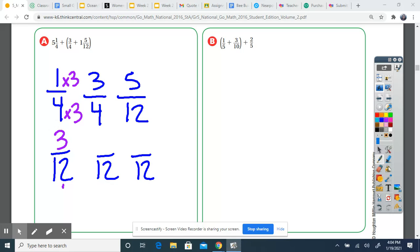Now I'm moving over to the three fourths. Four times three gives me 12, so I also multiply the top by three. Three times three gives me nine. So what times 12 gives me 12? Twelve times one. So you multiply the top by one, so this fraction just stays the same. So now we have three twelfths, nine twelfths, and five twelfths.